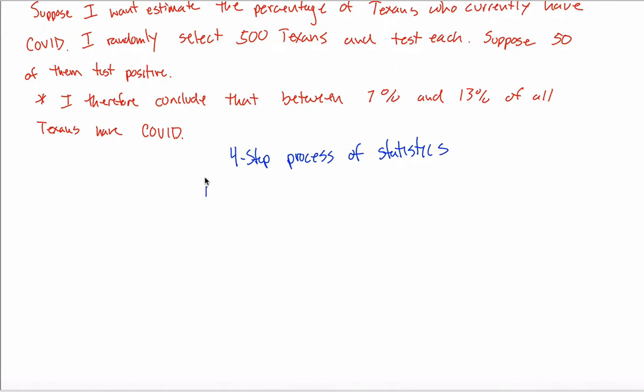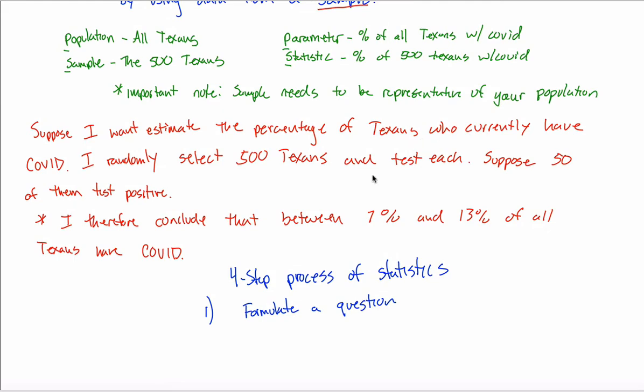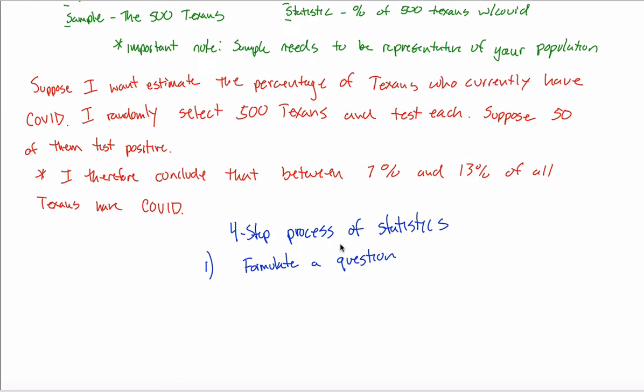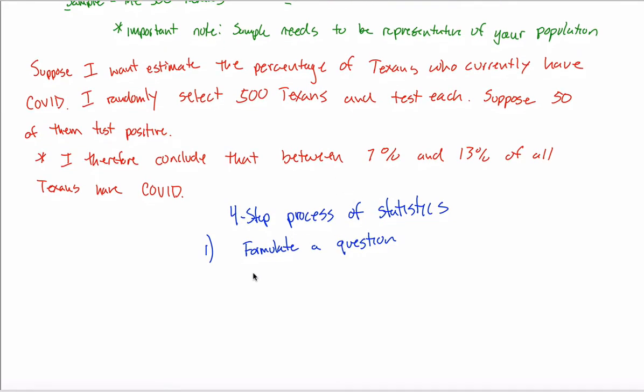So the four-step process of statistics: your first step is essentially formulating your question. So what are you doing here? Why are you doing statistics? You got this question about a really large group. What's your question? You're formulating your question. You want to know what percentage of all Texans have the COVID virus at some point. Fine, you formulate your question.